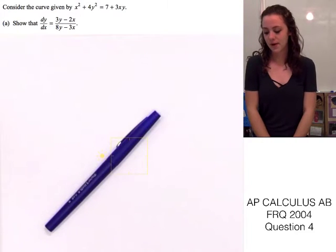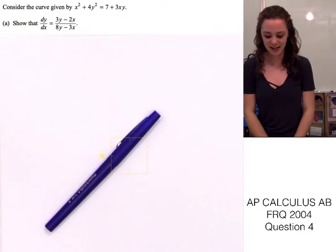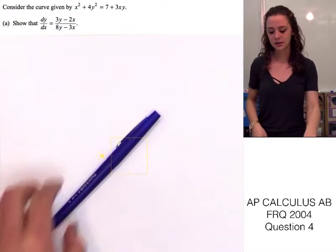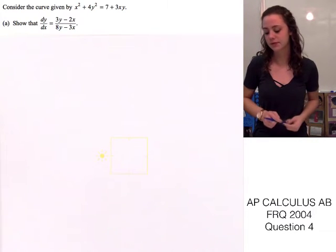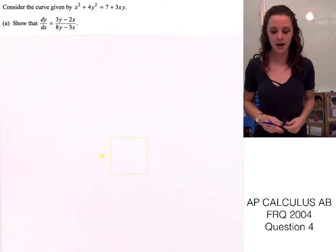I'm going to be doing a question from the 2004 AP Calculus Test. In this question it says, consider the curve given by x squared plus 4y squared equals 7 plus 3xy.